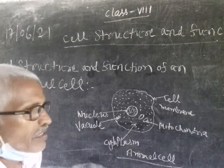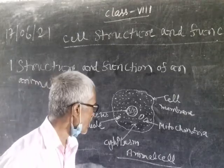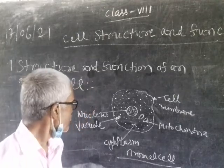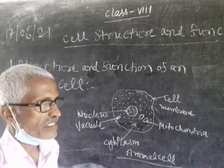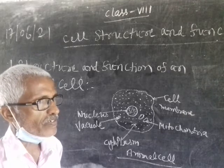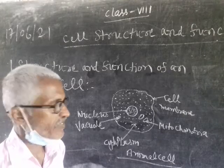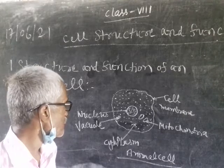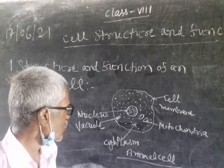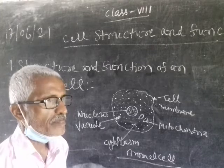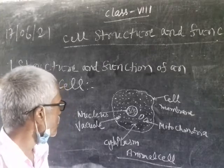Now vacuole. Vacuole appears to be an empty space but it is full of sugar, salt, and waste material. In animal cells, vacuole is very small.